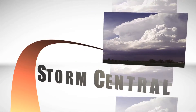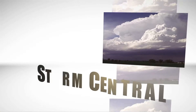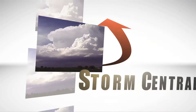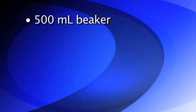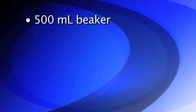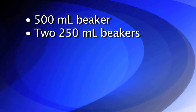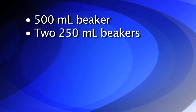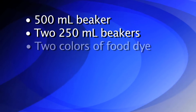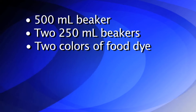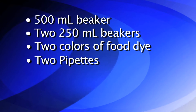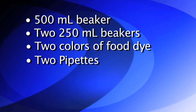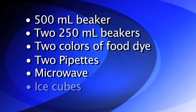The name of this lab is Storm Central. The materials we will need for this lab are a 500 milliliter beaker, two 250 milliliter beakers, two colors of food dye, two pipettes, a microwave, and some ice cubes.